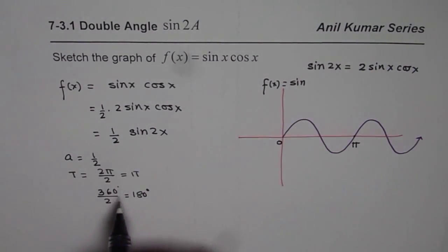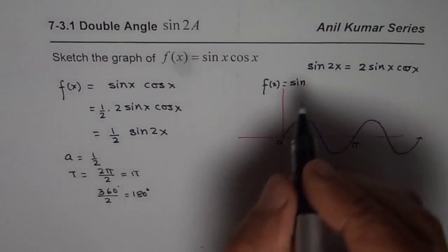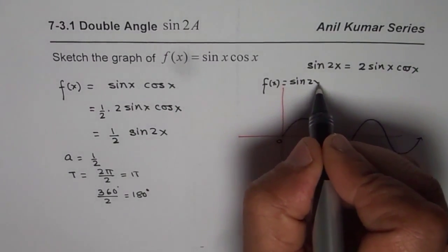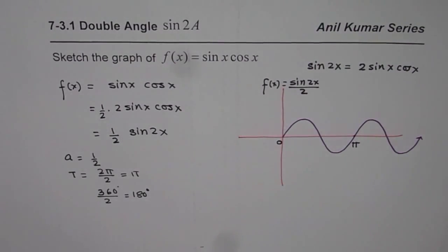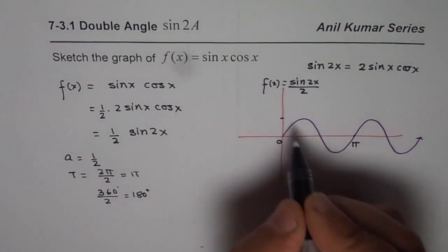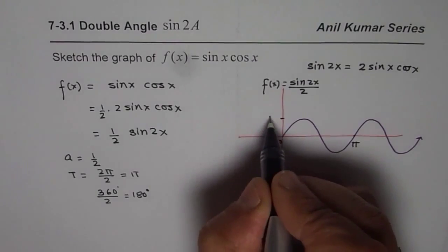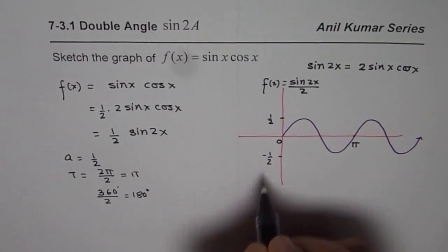Now we actually want half of sine 2x. So sine 2x and we want half, limit over 2. That is what we are looking for. So the amplitude of the sine wave will now become half. So this is half. This is minus half.